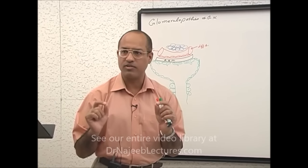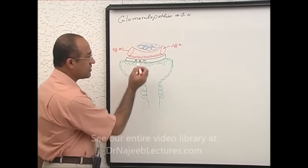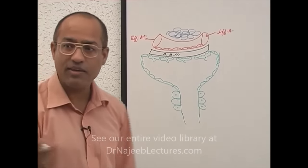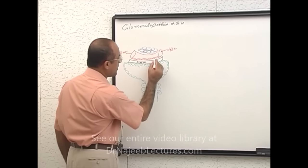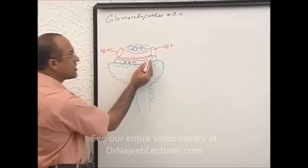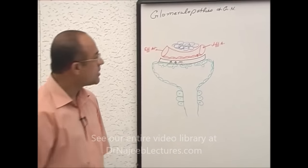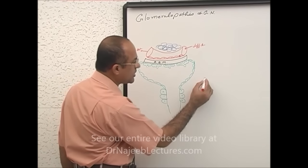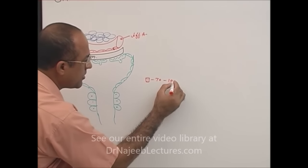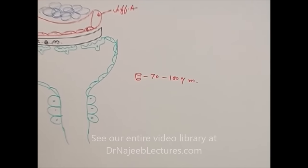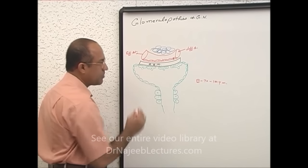What are fenestrations? Fenestrations are pores — these endothelial cells are porous, having thousands and thousands of fenestrations in every endothelial cell. One fenestration has a size of about 70 to 100 nanometers. So this is the size barrier on the endothelial cell side.